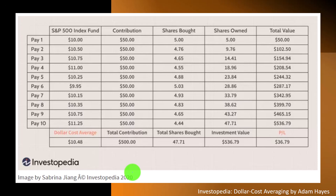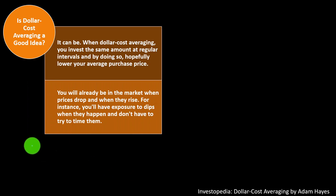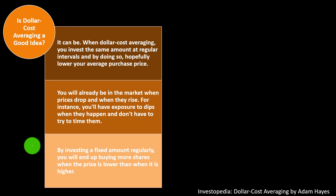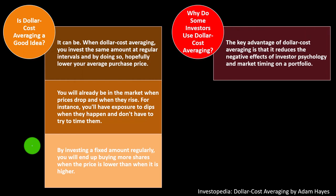Is dollar cost averaging a good idea? It can be. When dollar cost averaging, you invest the same amount at regular intervals. By doing so, you hopefully lower your average purchase price. You will already be in the market when prices drop and when they rise. By investing fixed amounts regularly, you will end up buying more shares when the price is lower than when it is higher.